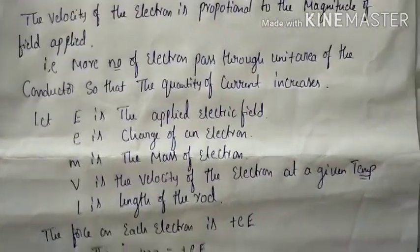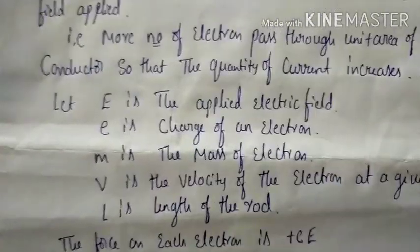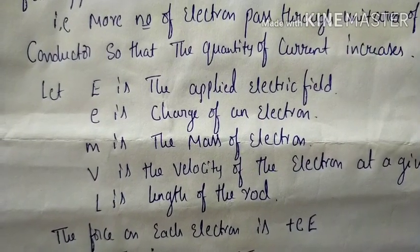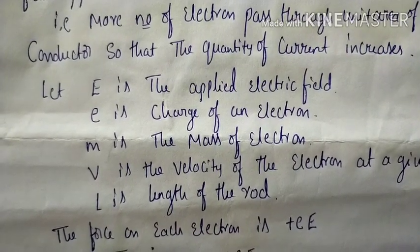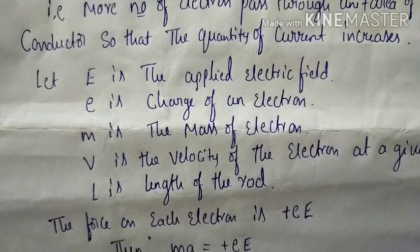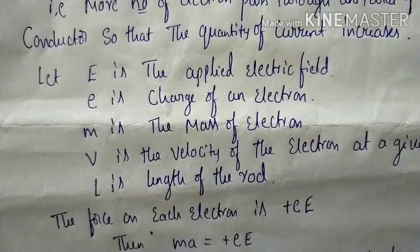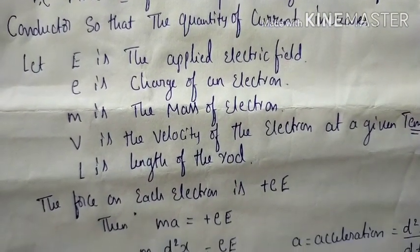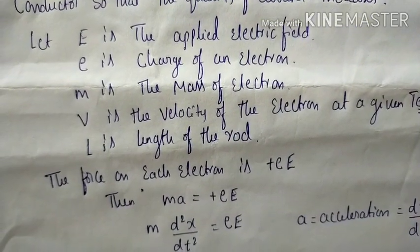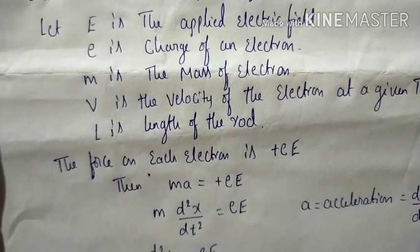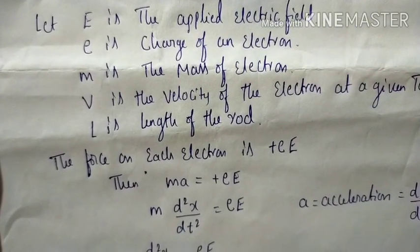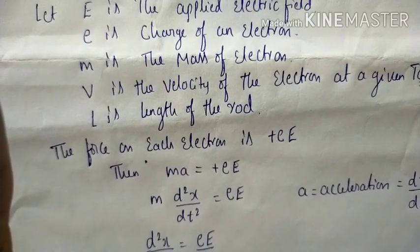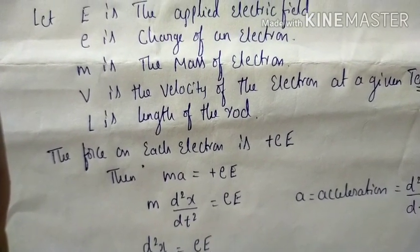Let us consider: capital E is the applied electric field, small e is the charge of the electron, m is the mass of the electron, v is the velocity of the electron at a given temperature, and l is the length of the rod. The force on each electron is given by eE.